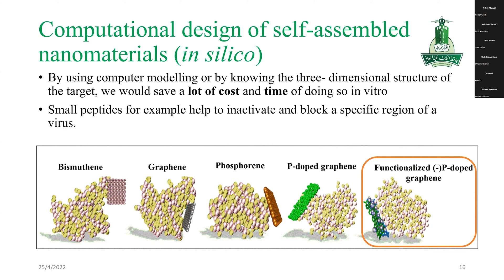By knowing the 3D structure of the target, we save a lot of cost and time compared to doing it in vitro. Here is an example of testing these molecules on SARS-CoV-2, where functionalized graphene was found to inhibit the spike protein interaction. So we can save a lot of time and cost by doing modeling of these components rather than doing it in vivo or in vitro.